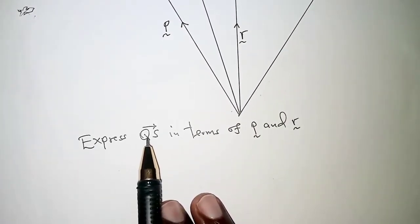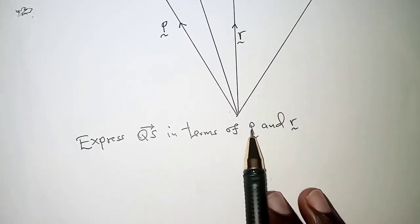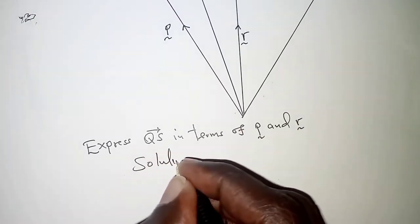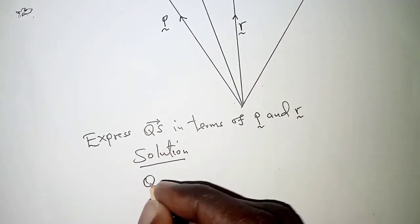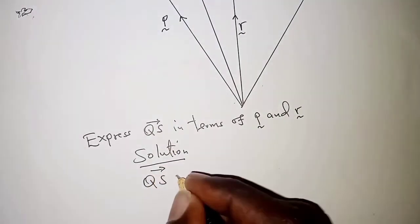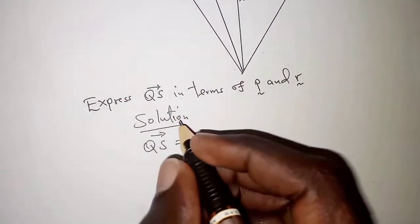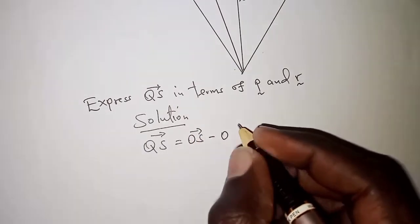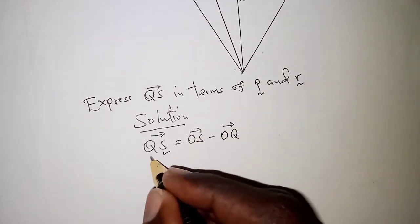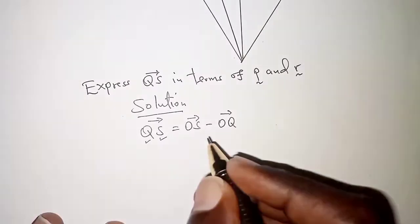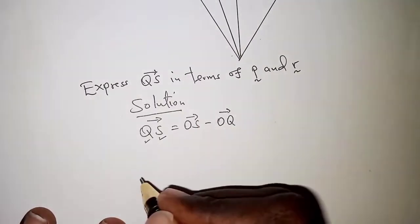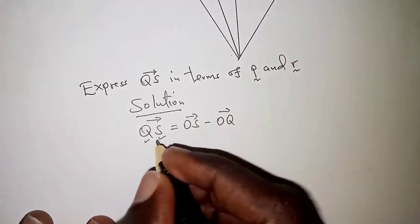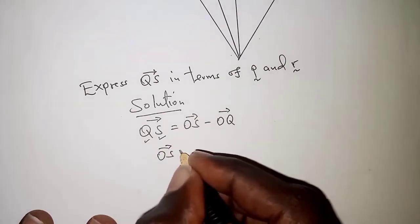With that interpretation we can work out the problem. We are told to express QS in terms of p and r. We proceed as follows: vector QS can be obtained as the position vector of S minus the position vector of Q, that is OS minus OQ. We will find OS and OQ independently and then combine them by subtracting.